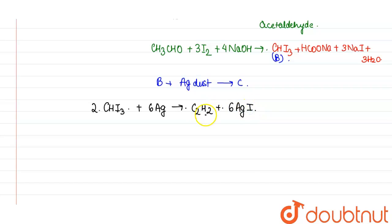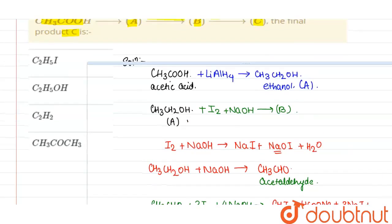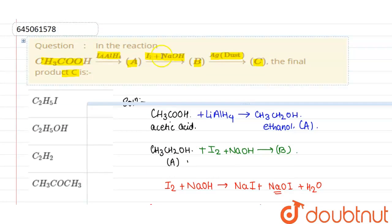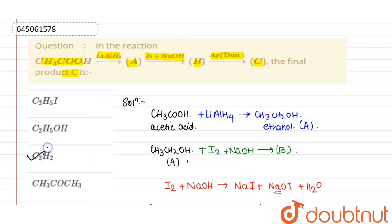So this is the product here. So C is C2H2 and the answer is this. Thank you.